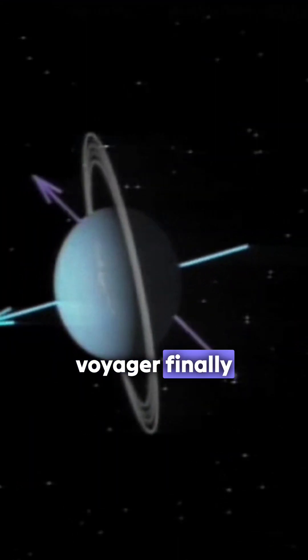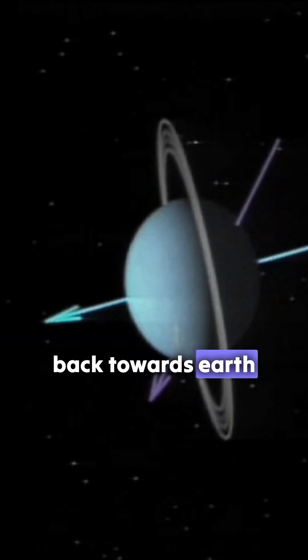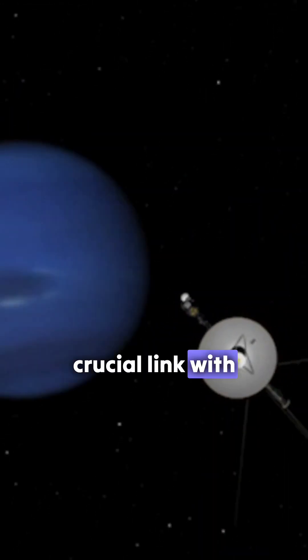Now the grand moment. On August 4, Voyager finally swung its antenna back towards Earth, establishing a crucial link with mission control.